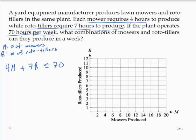All right, so now let's graph this as an equation. So we have 4m plus 7r. Or let's think equals for a moment - let's assume it's an equals for just a moment.